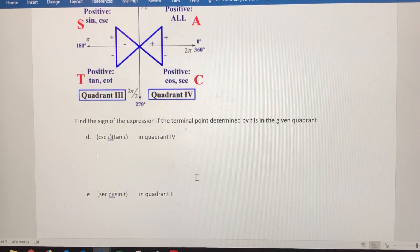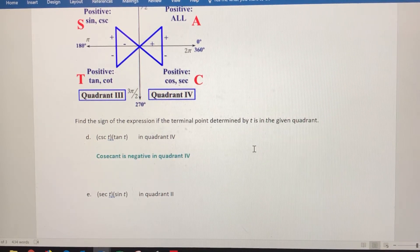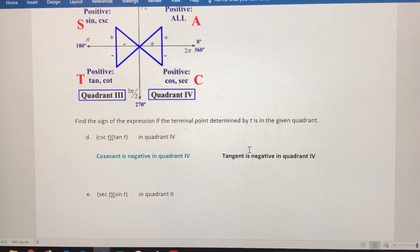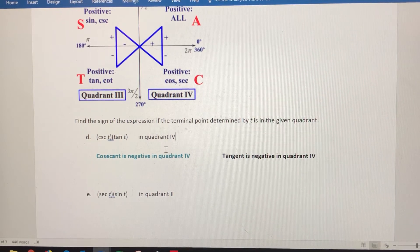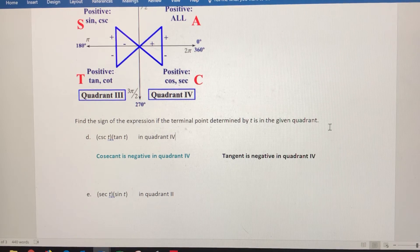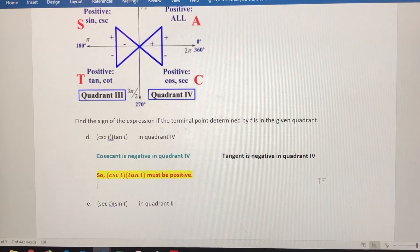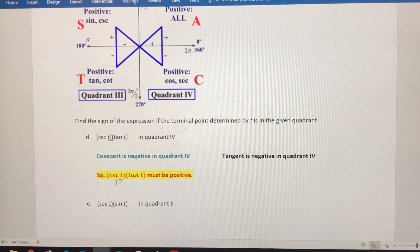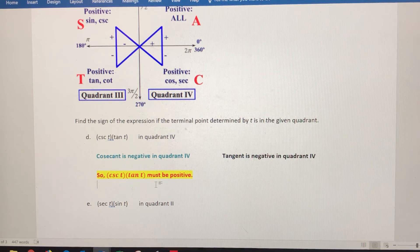Cosecant in quadrant four is negative. Tangent in quadrant four is also negative. The product of two negative values, regardless of what they are, is positive. So the product must be positive in quadrant four. No matter what t is, cosecant of t times tangent of t is going to be a positive number.